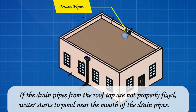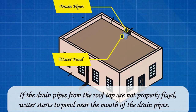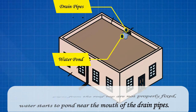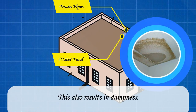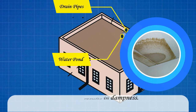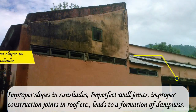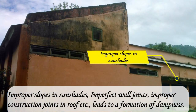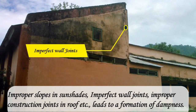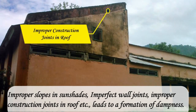Improper fixing of drain pipes: if the drain pipes from the rooftop are not properly fixed, water starts to pond near the mouth of the drain pipes, which also results in dampness. Improper construction joints: improper slopes in sunshades, imperfect wall joints, and improper construction joints in the roof also lead to the formation of dampness.